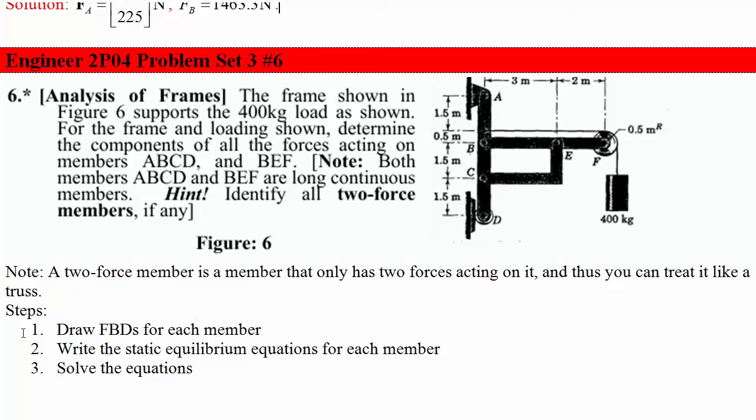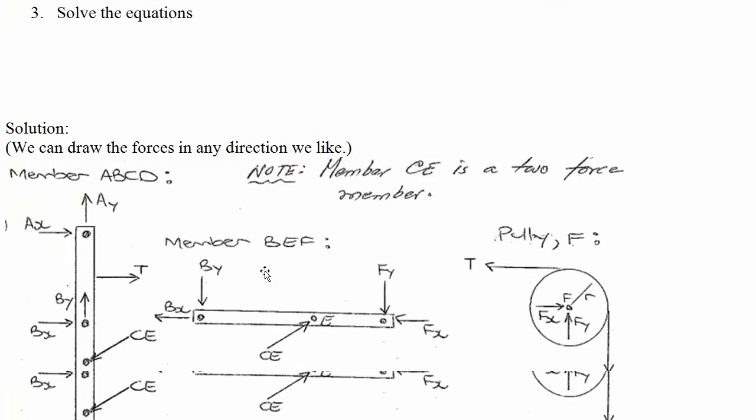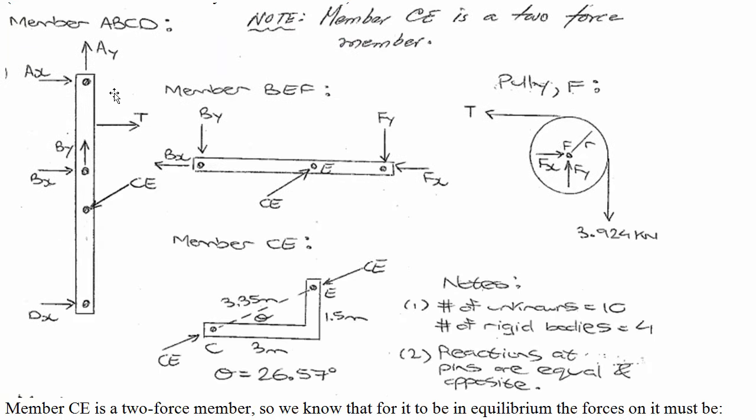The way you want to do this is draw the free body diagrams for each member, write the static equilibrium equations for each member, and then solve the equations. All right, so here's the free body diagrams. We've got a lot of forces on member ABCD. We've got not quite as many on BEF, less on the pulley. And then the member with the least forces is member CE. This has only two reaction forces on it, which makes it a two force member.